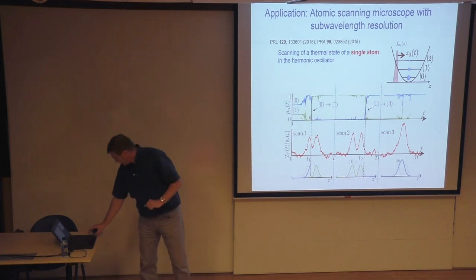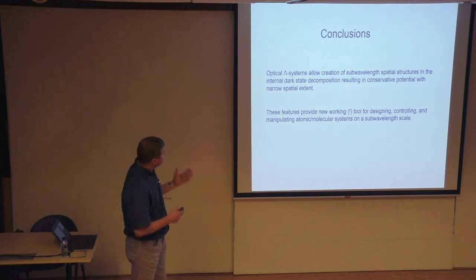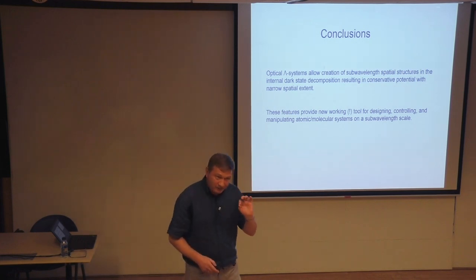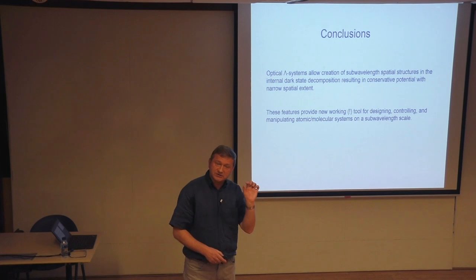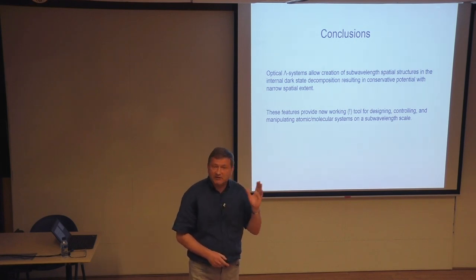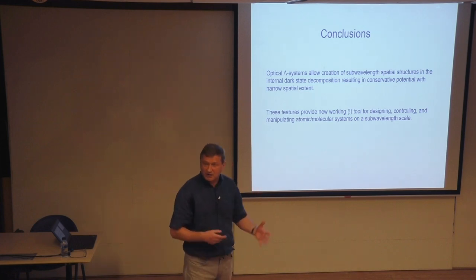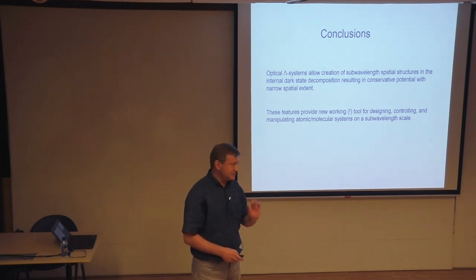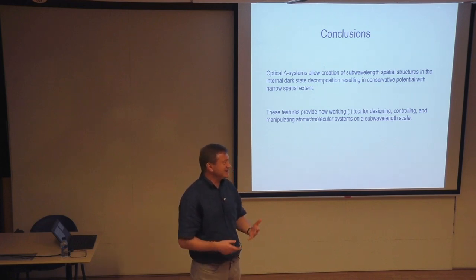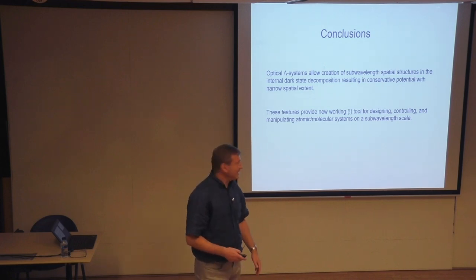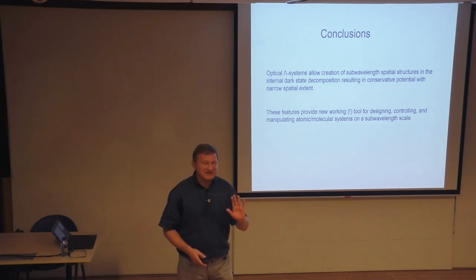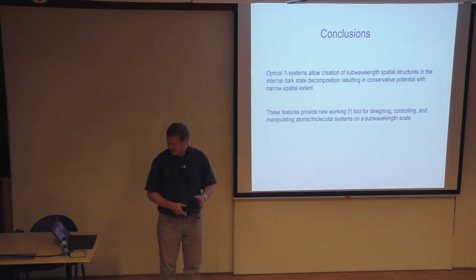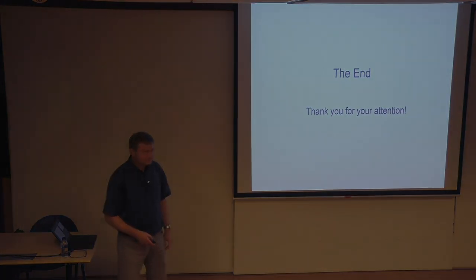In conclusion: the optical lambda system allows creation of optical potentials that are very narrow and very high, with several potential uses depending on your experimental setup and imagination. Importantly, this is a working thing — it was realized in experiments, which is always good for theorists, because experimentalists start trusting you. There are many experimental proposals at the nanoscale stage, and we need brave experimentalists. Thank you for your attention.